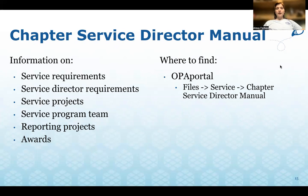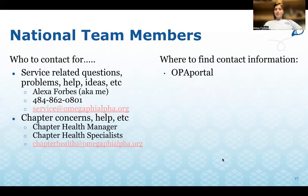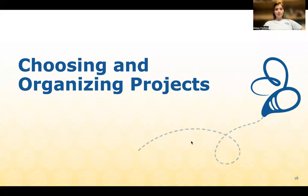The chapter service director manual is found on OPA Portal and has information on service requirements, service director requirements, service projects, service program team, reporting projects, and awards. The president's project service guide has an overview of the president's project and project suggestions, also on OPA Portal. You can reach out to national team members with service-related questions at service@omegaphialpha.org. For chapter concerns, contact the chapter health manager or specialists at chapterhealth@omegaphialpha.org.